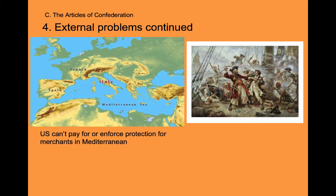Since we couldn't sell to England, France, Spain, or the Dutch, American merchant ships looked for new customers in the Mediterranean — Italy, the Ottoman Empire, Greece, Egypt. But there were pirates in the Mediterranean who attacked our ships because it was easy pickings — there was no U.S. Navy to protect U.S. merchant ships. Other countries either used their navy to deter pirates or paid them protection money. The United States couldn't do either because we had no money for a navy and no money for protection payments, leaving America looking weak and foolish on the international stage.